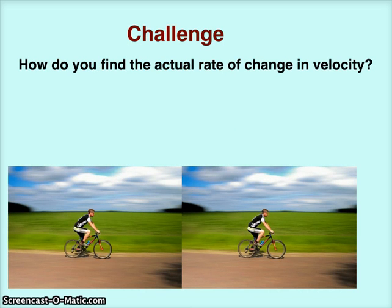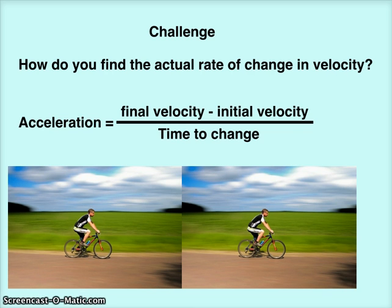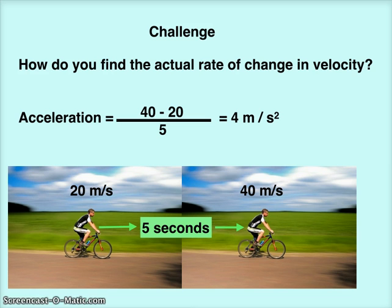Challenge: how do you find the actual rate of change in velocity? To do this, you need a simple formula. Acceleration equals the final velocity minus the initial velocity, divided by the time to change between those two velocities. So if a bicyclist was going 20 meters per second at the beginning and then went 40 meters per second at the end, and it took 5 seconds to make that change, the acceleration would equal 40 minus 20 divided by 5, giving us 4 meters per second per second, otherwise known as 4 meters per second squared.